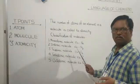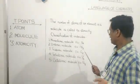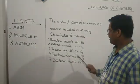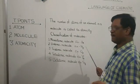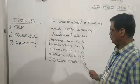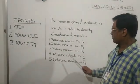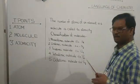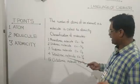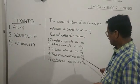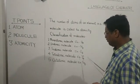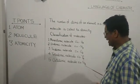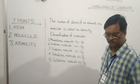The five categories based on atomicity are: monoatomic molecule — example He; diatomic molecule — example N2; triatomic molecule — example O3; tetraatomic molecule — example P4; and octoatomic molecule — example S8.